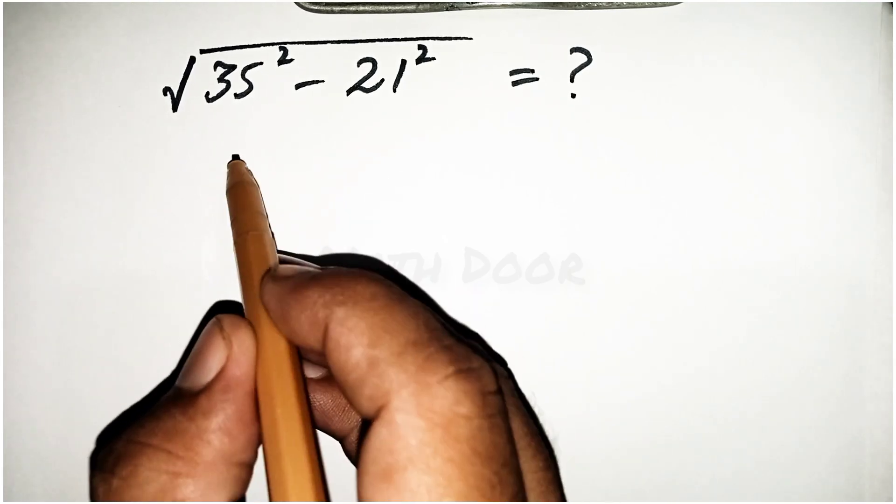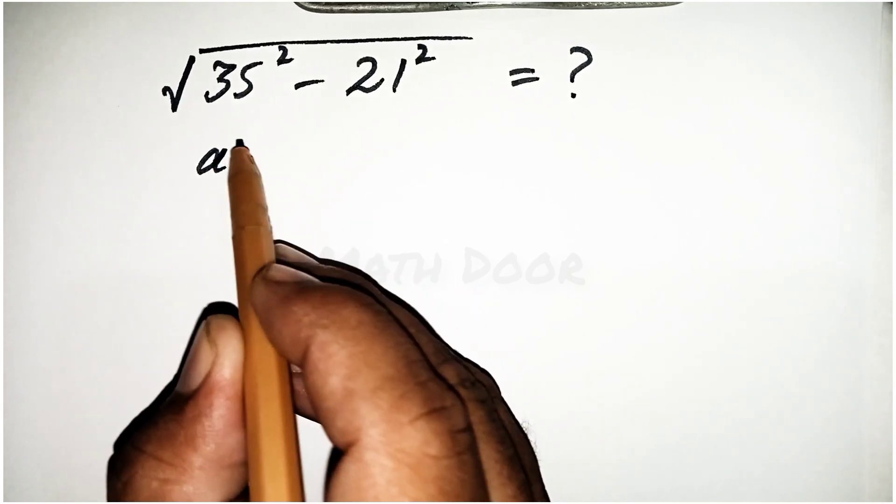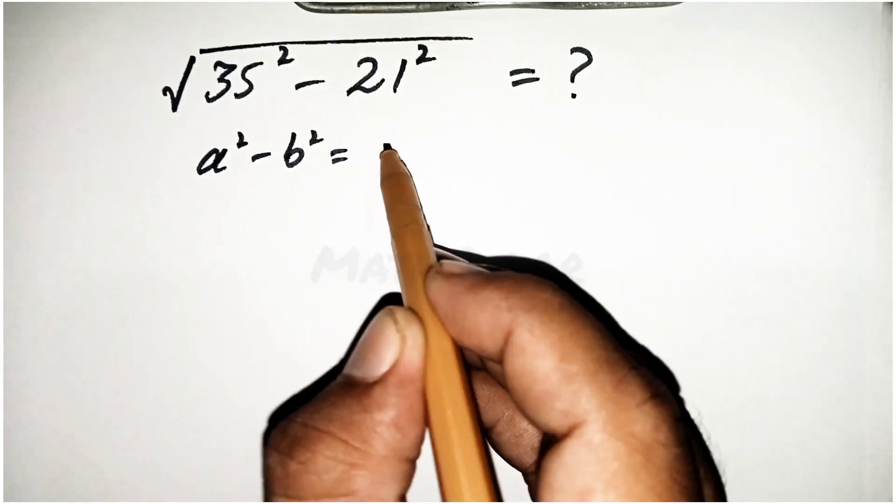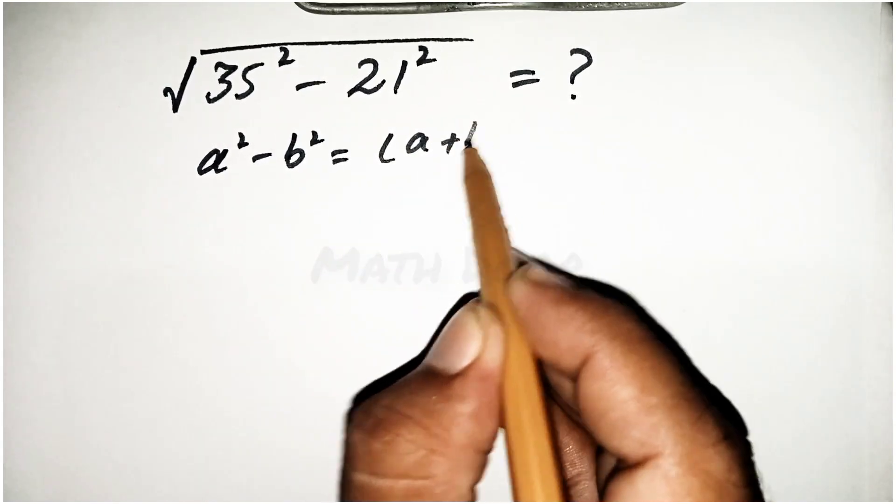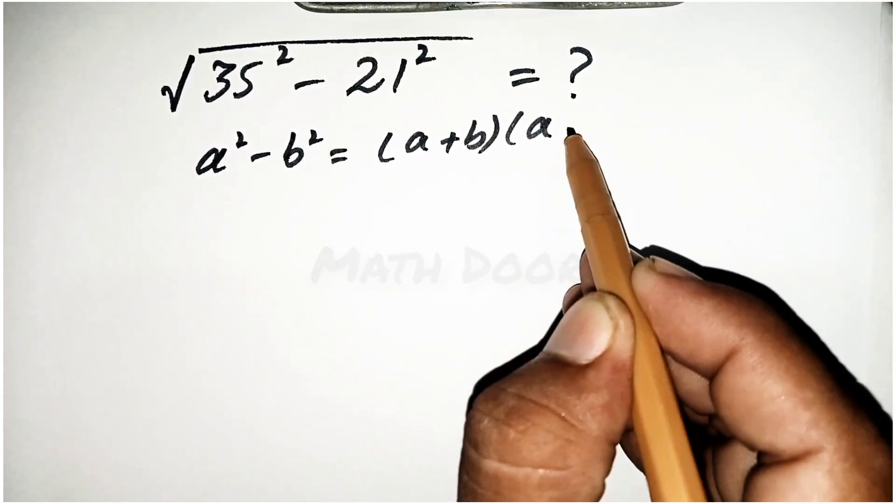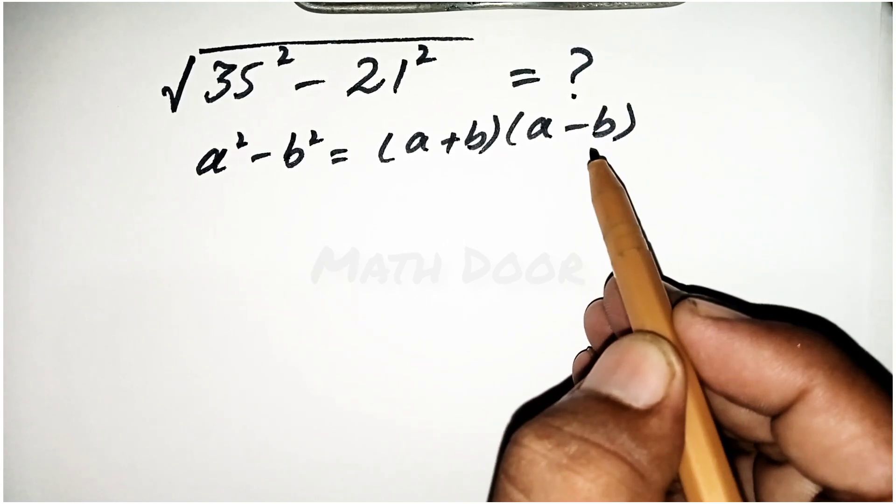First of all, we have a formula: a² - b² = (a + b)(a - b).